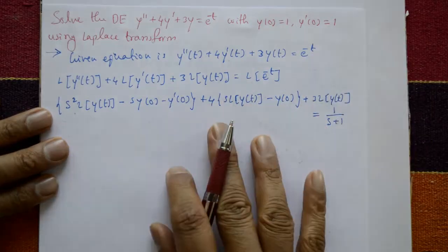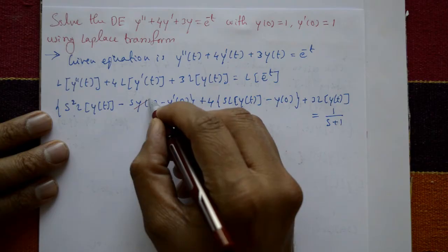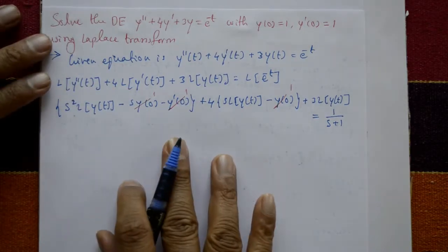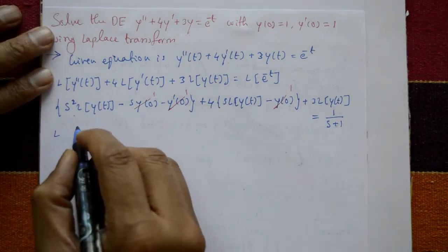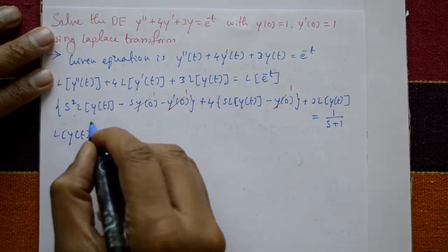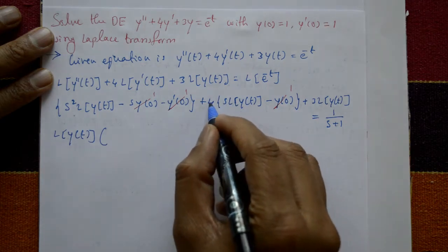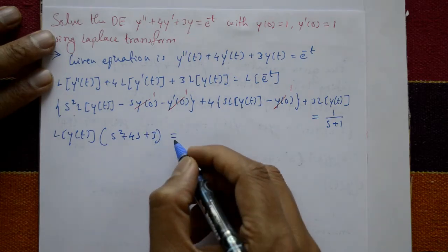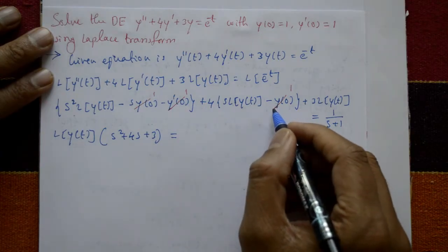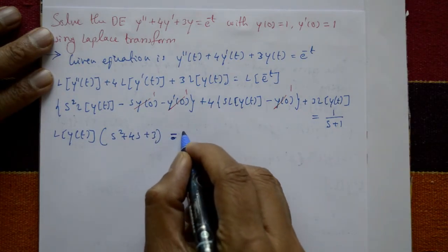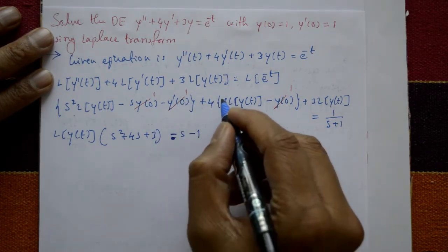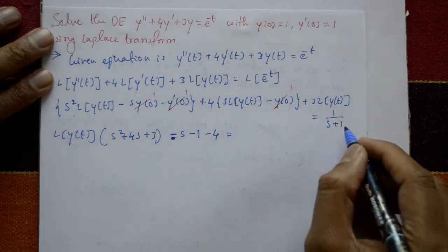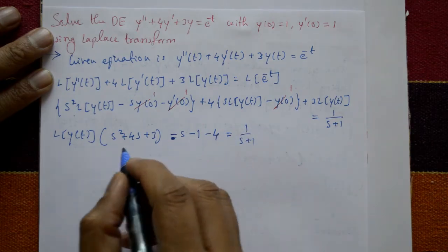Now the conditions are given: y of 0 is equal to 1 and y dash of 0 is equal to 1. Substituting these values, y of 0 is 1 and y dash of 0 is 1. Taking Laplace of y of t as common, we get s squared plus 4s plus 3 on the left side. The constants become: minus s minus 1 from the first term, and minus 4 from the second term, giving a total of minus s minus 5. The right side remains 1 upon s plus 1.